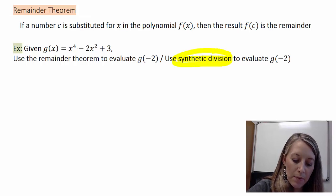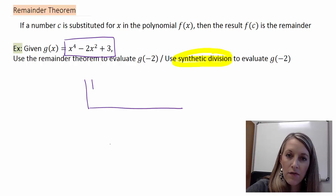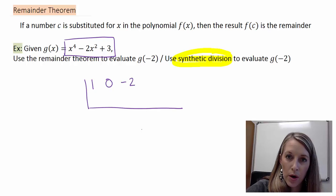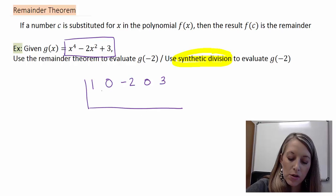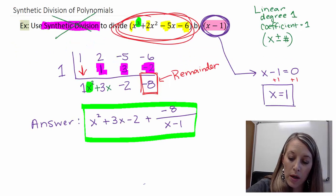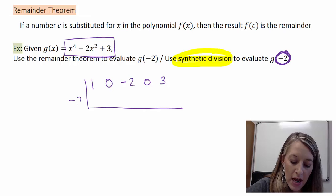Let's set this up. I put the coefficients into synthetic division. I have 1x to the fourth; I'm missing x cubed, so I put in a zero. I have negative 2x squared; I'm missing a single x term, so I put in a zero there. My constant term is 3. Now I need to figure out what to divide by. This is not in polynomial format like x minus 1 or x plus 3 — it's just g of negative 2, so I divide by negative 2.